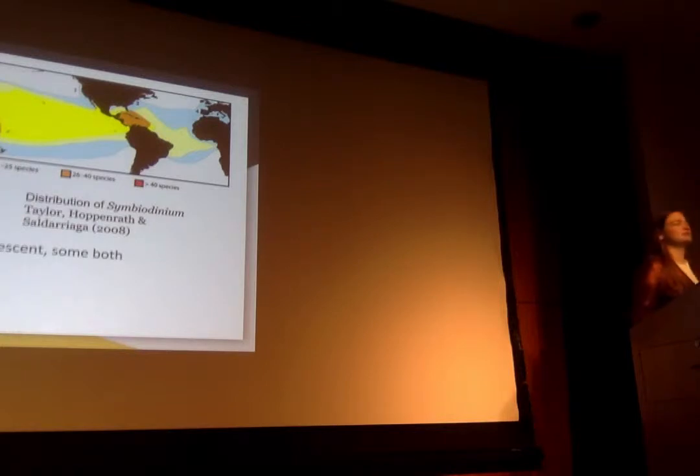There are some species that are toxic so that when they become overabundant they will cause these red tides and massive fish kills. And then there are other species that are bioluminescent which means that whenever they are disturbed they will flash bright blue for a second. And then there are some species that are both toxic and bioluminescent.